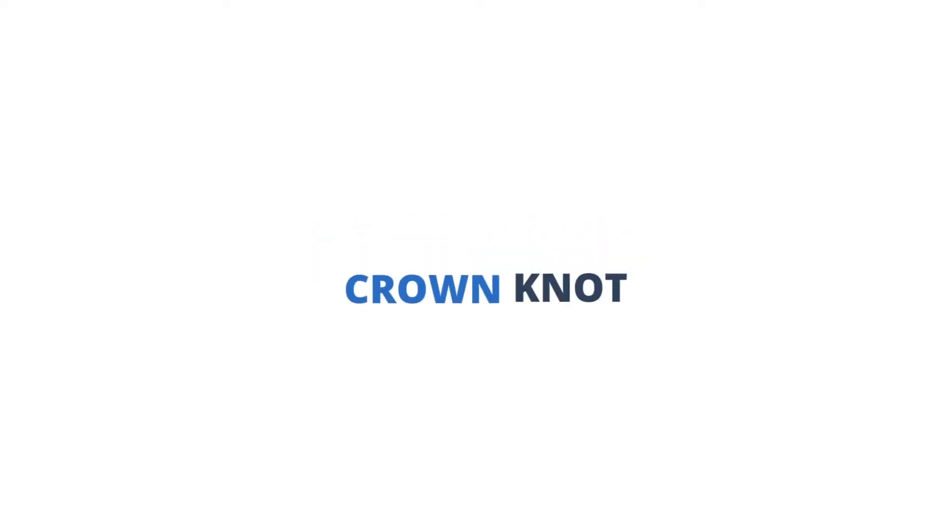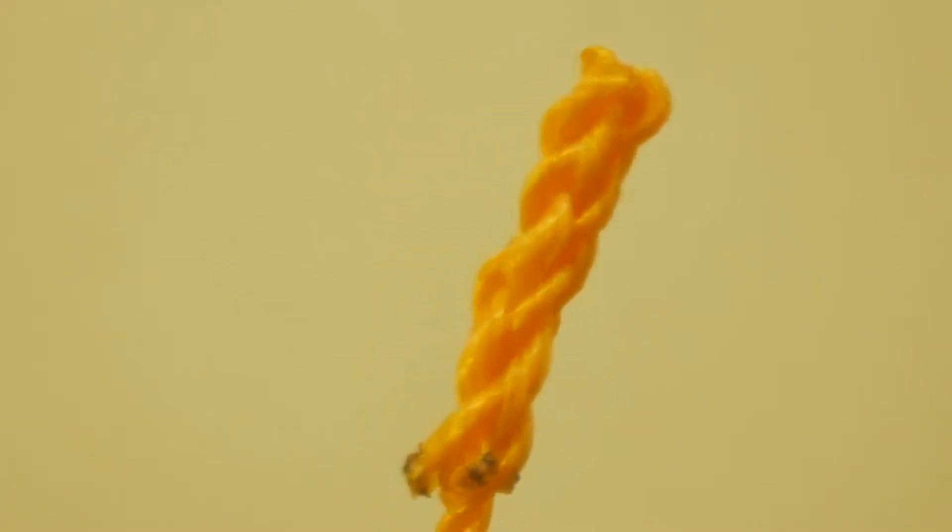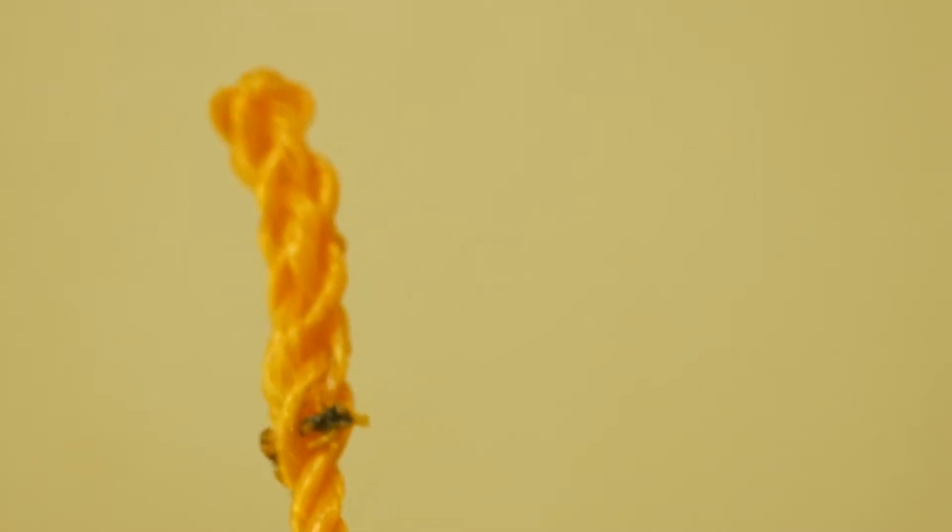Lastly, the back splice is used to permanently prevent the end of the rope from unraveling. Perform a crown knot, then proceed to the usual splicing.